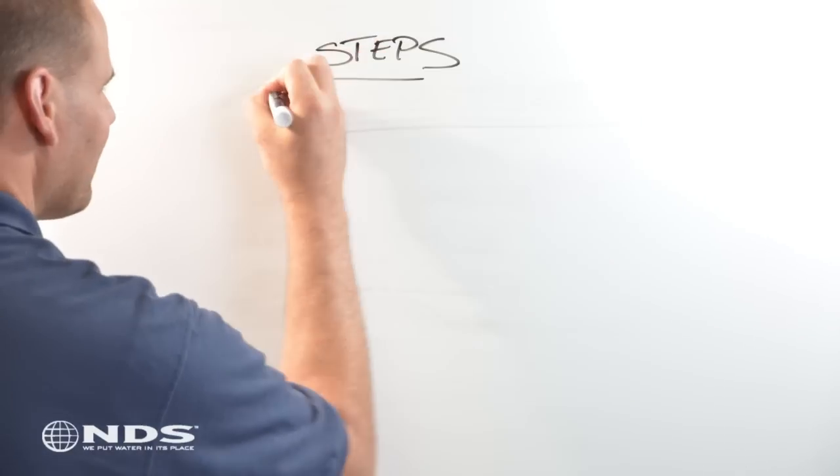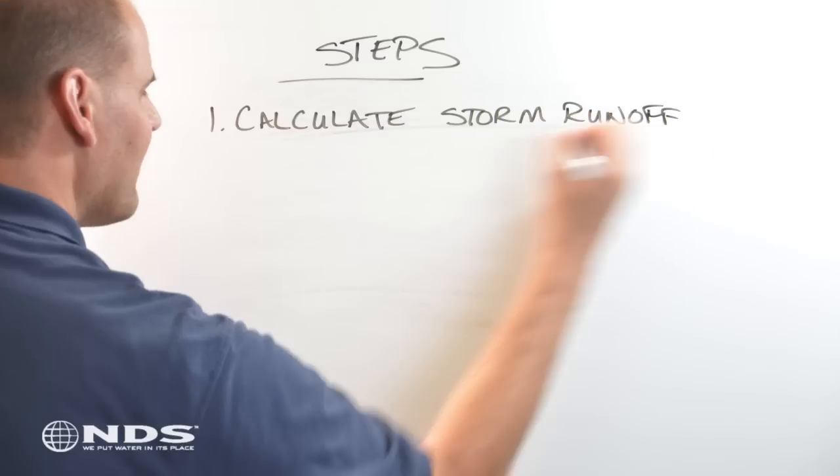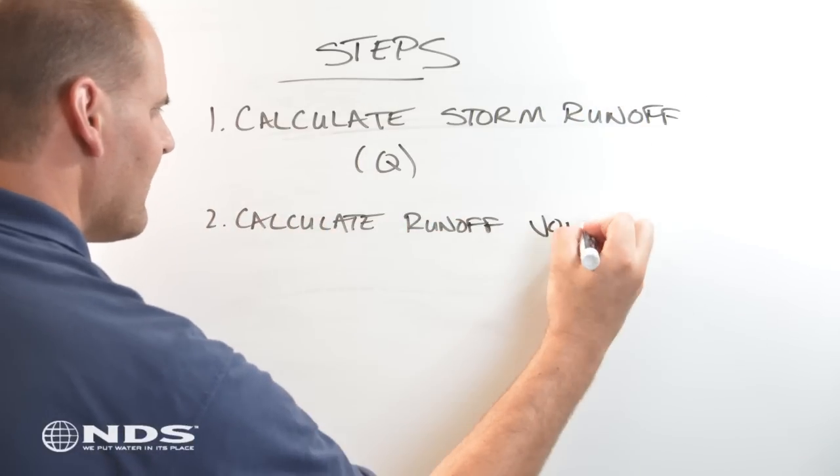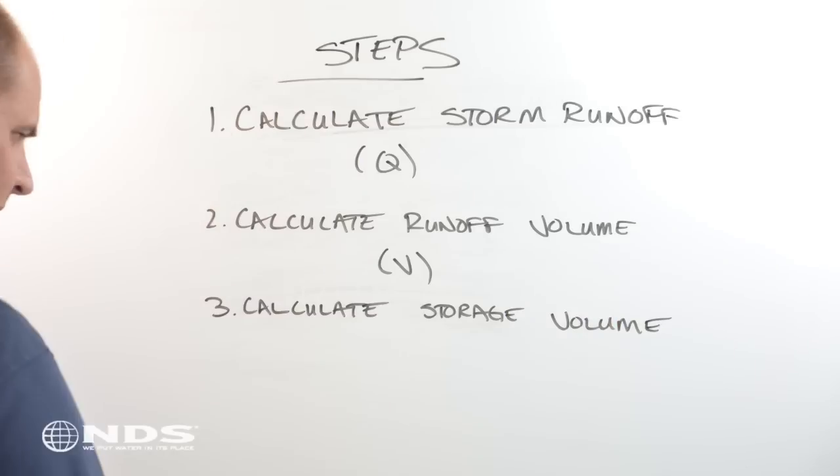There are three steps to follow when calculating drainage. First, we need to calculate the storm runoff, or flow. Runoff is given the symbol Q. Second, we convert the storm runoff into a volume of water. And finally, we determine how we are going to store the runoff volume.